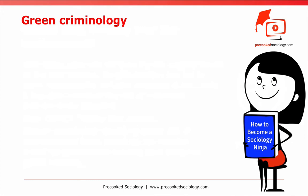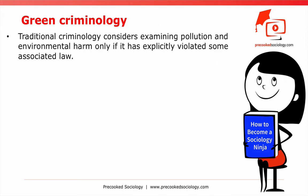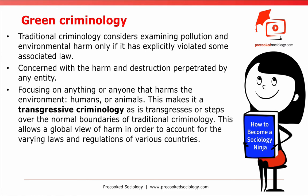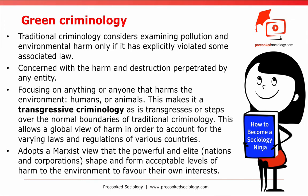To understand green criminology, it must be compared to the parameters of traditional criminology. Traditional criminology considers examining pollution and environmental harm only if it has explicitly violated some associated law, focusing on criminal law issues only. Green crimes are viewed outside of just breaking the law — they are concerned with the harm and destruction perpetrated by any entity. Green criminology works within this wider, more radical philosophy, focusing on anything or anyone that harms the environment, humans, or animals. This makes it a transgressive criminology, as it transgresses the normal boundaries of traditional criminology. Green criminology adopts a Marxist view that the powerful and elite — nations and corporations — shape acceptable levels of harm to the environment to favor their own interests over the less powerful in society.